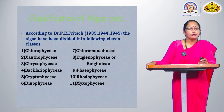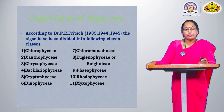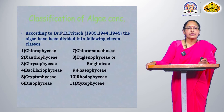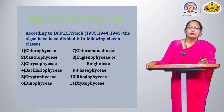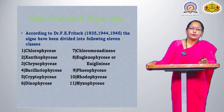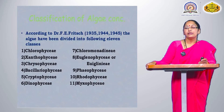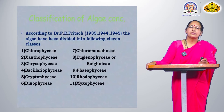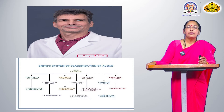According to Fritsch, from 1935 to 1945, algae have been divided into the following 11 classes: Chlorophyceae, Xanthophyceae, Chrysophyceae, Bacillariophyceae, Cryptophyceae, Dinophyceae, Chloromonadii, Euglenophyceae, Phaeophyceae, Rhodophyceae, and Myxophyceae.